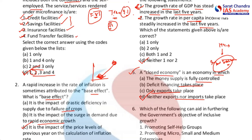Next question: which of the following can aid in furthering the government's objective of inclusive growth? Inclusive growth means to the best possible extent, everyone would be brought into the growth cycle and everyone will enjoy the fruits of growth and development, so that no one would be left out or at the receiving end.